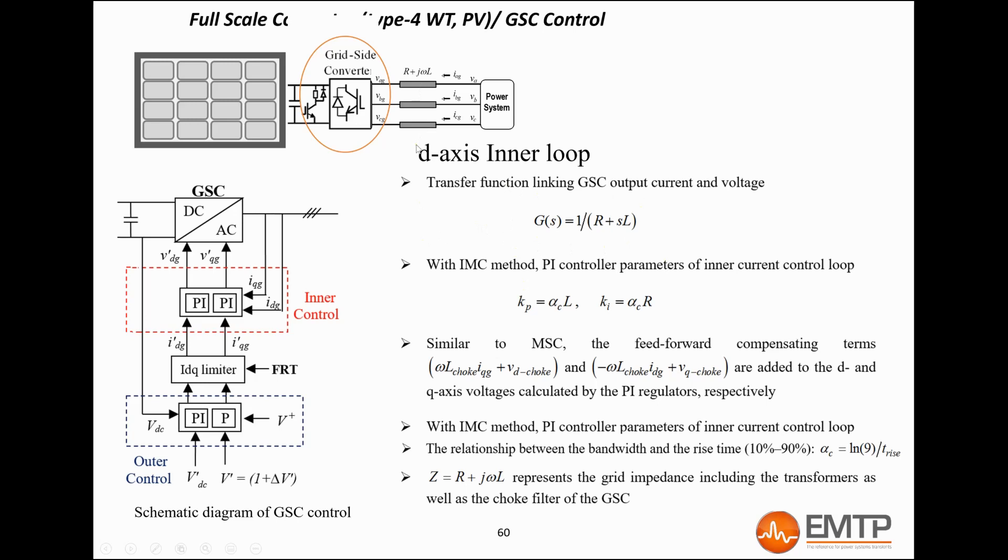where R and L are the resistances and inductances of the filter choke, the converter transformer, the park transformer, and the grid-side impedance combined. In the generic model mask, the user can set the rise time, which determines the inner loop speed. It is typically set to 10 ms.